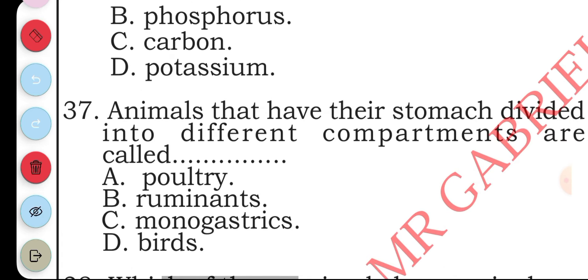Question thirty-seven: animals that have their stomach divided into different compartments are called: A poultry, B ruminants, C monogastrics, D birds. The answer to question thirty-seven is B, ruminants. They have four chambers to the stomach.